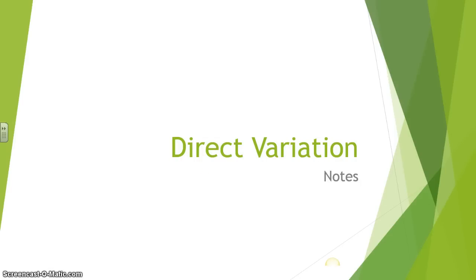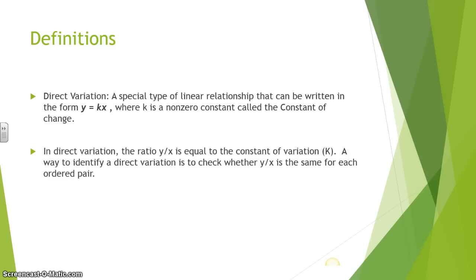This section is on direct variation. With direct variation, there's a definition here that you need to understand. It is a special type of linear relationship, remember linear means a straight line, that can be written in the form of y equals k times x, where k is a non-zero constant called the constant of change.